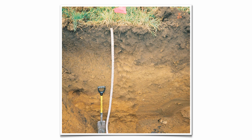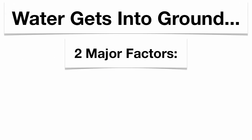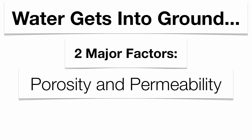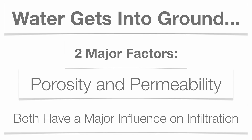We have a lot to talk about today, so we're going to go through this kind of quickly. When you look at soils underneath the microscope, you'll see that there's a variety of sizes, shapes, even colors, packing, organization. A lot of factors are going to influence how easy it is for water to work its way into the soil. Groundwater gets there by two major factors: the porosity of the soil and the permeability of the soil. These are ultimately going to have a major influence on how infiltration is going to take place within a certain sample.